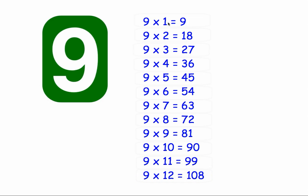So to recap: 9 times 1 equals 9. 9 times 2 equals 18. 9 times 3 equals 27. 9 times 4 equals 36. 9 times 5 equals 45. 9 times 6 equals 54.